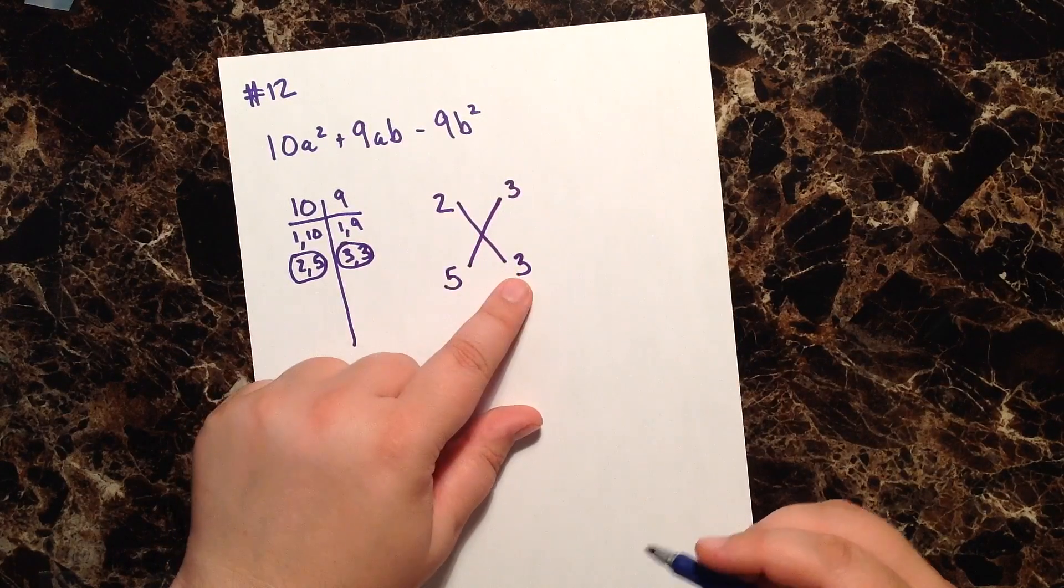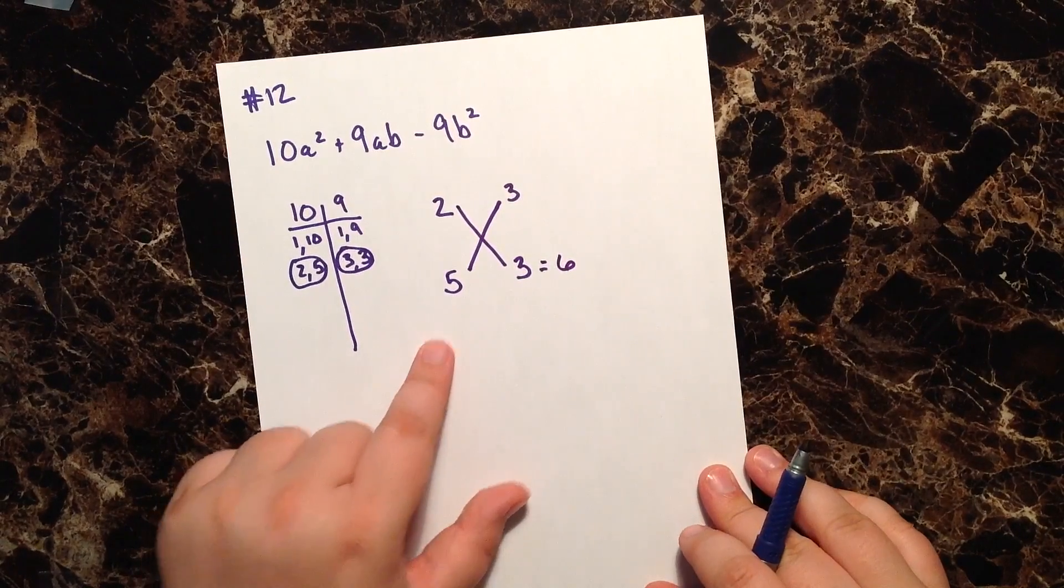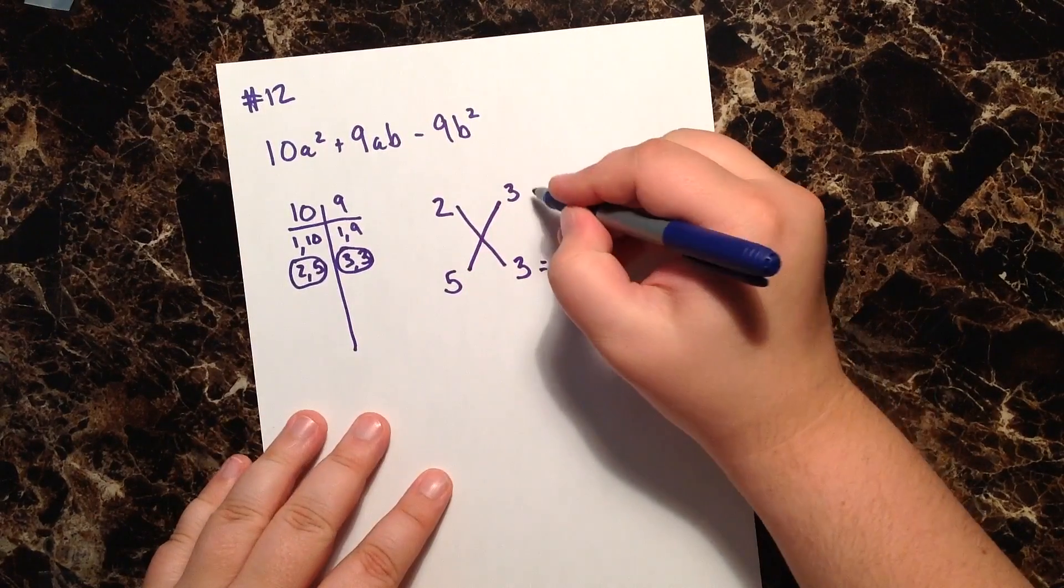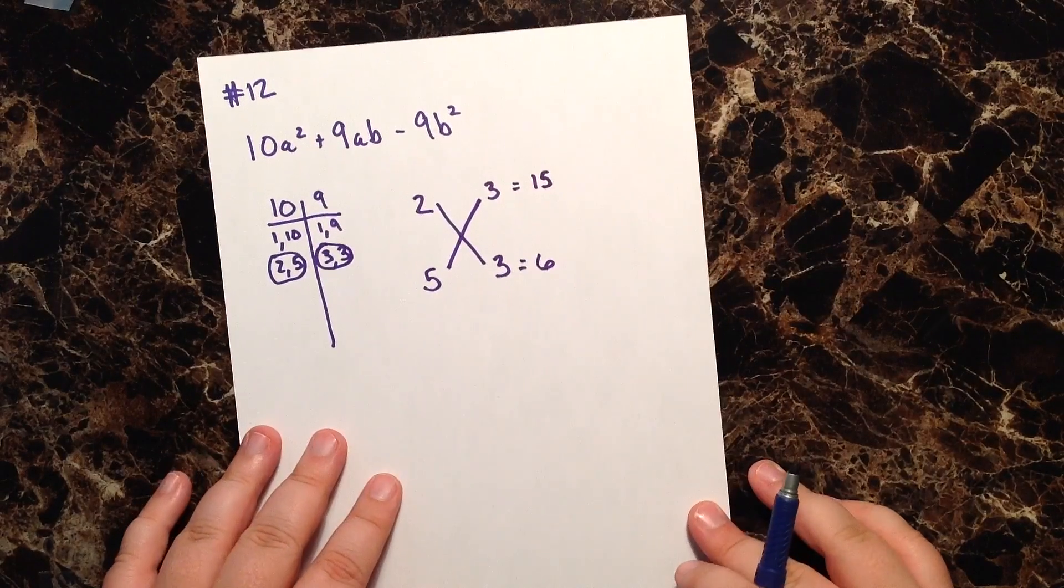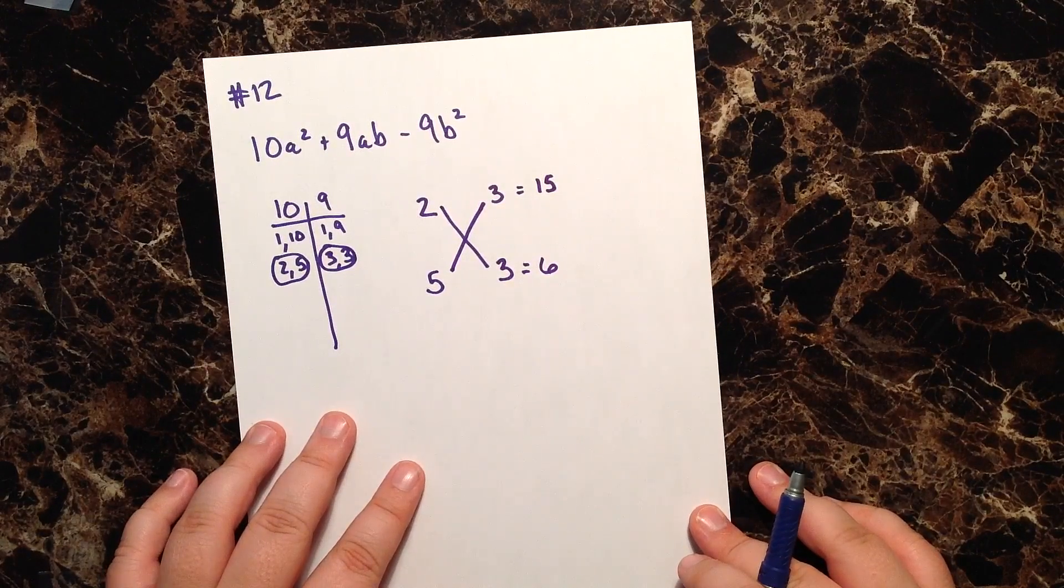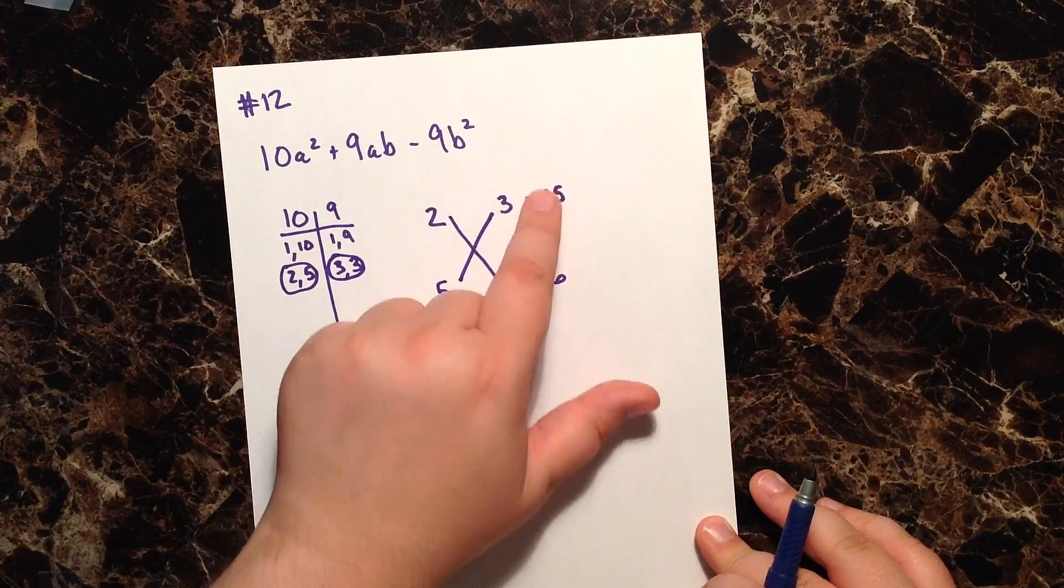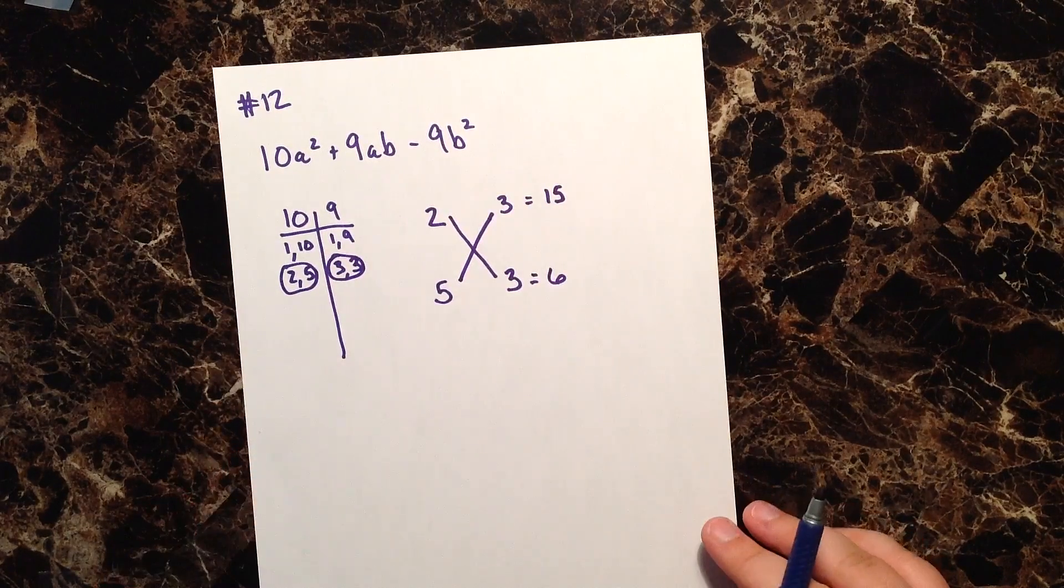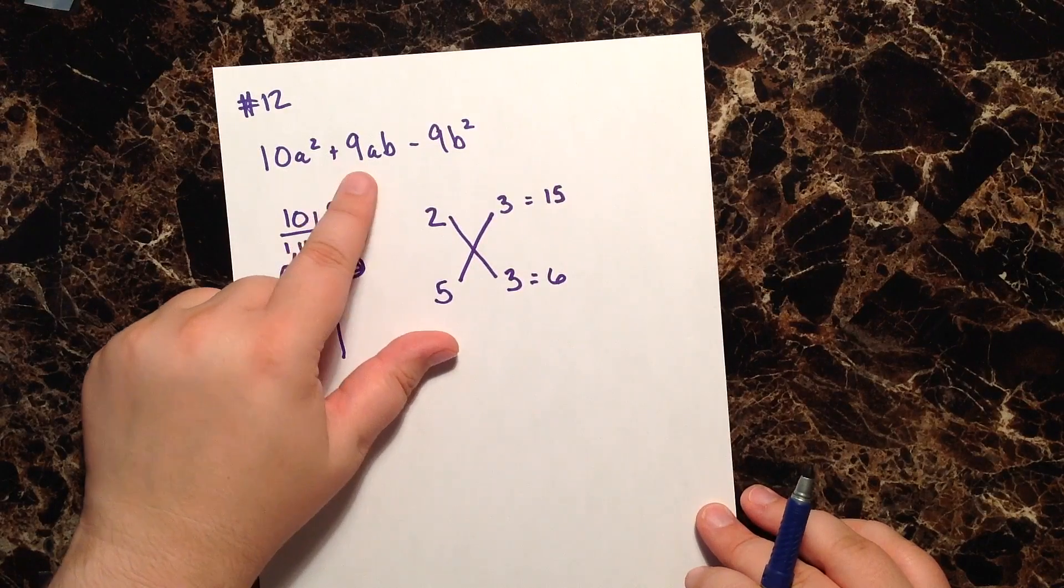What is 2 times 3? Well, 2 times 3 gives me 6, and 5 times 3 gives me 15. So now I have to ask myself, is there a way, using subtraction, because the second sign tells me subtraction, that I can somehow subtract 15 and 6 in some combination to give me a positive 9?